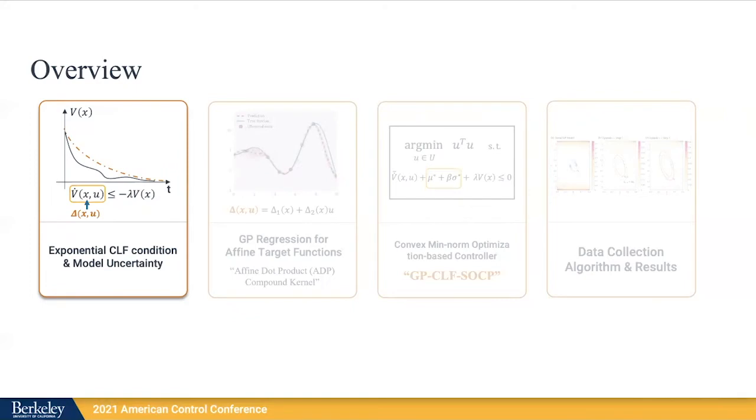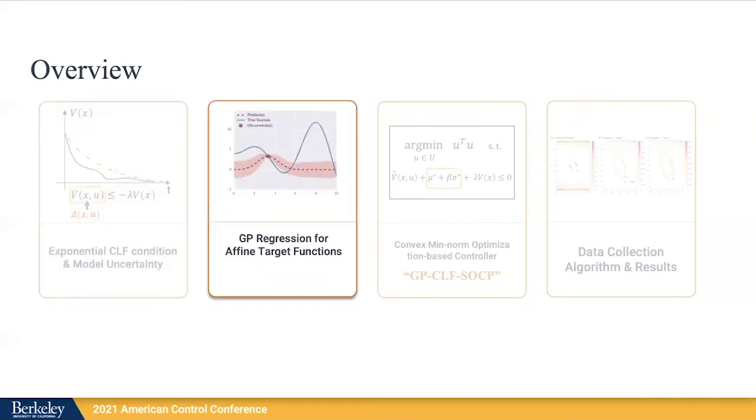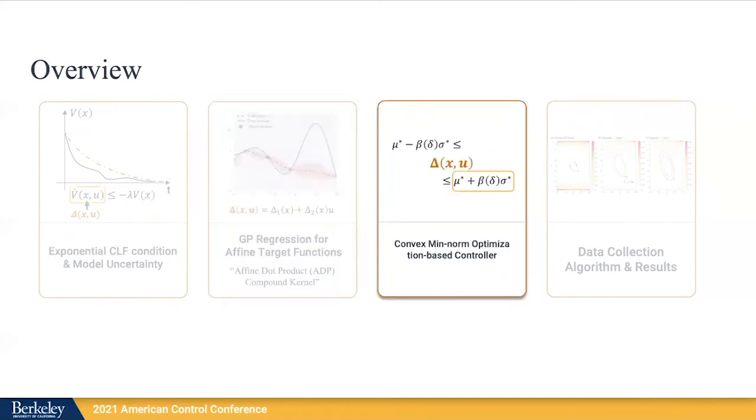However, regarding our stabilizing objective, the uncertain effects can be captured by a single scalar function named delta. Therefore, we can formulate a supervised learning problem in order to learn this uncertain effect. Specifically, we'll use Gaussian process regression, which provides bounds of prediction confidence together. The main structure we want to capture is that delta has a control-affine structure. In order to capture this, we propose a compound kernel called an affine dot product kernel.